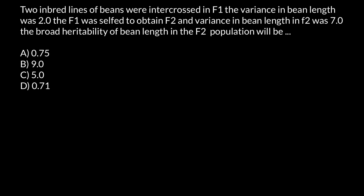Let me explain a little theory about what we call inbred lines, or we also sometimes call these pure lines. Here is Parent 1 and here is Parent 2. Let's take three genes as an example. Parent 1 for gene A would be homozygous dominant, for gene B would be homozygous dominant, and for gene C would be homozygous recessive.